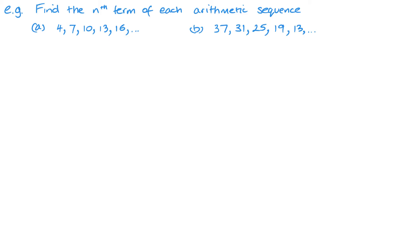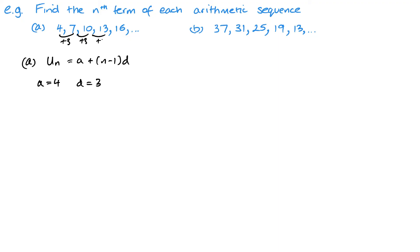In this example we have sequences and we want to find the nth term using the formula UN = A + (N − 1)D. In sequence A, we can see that A = 4 as that's the first term, and D = 3 as it's going up in 3s. Substituting into the formula: 4 + 3(N − 1). Expanding the brackets gives 3N + 1.